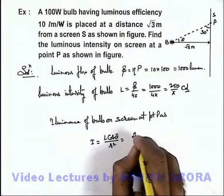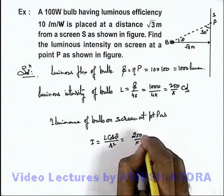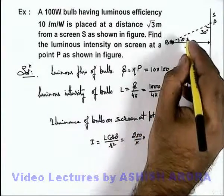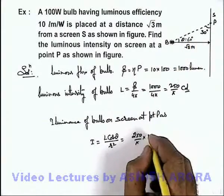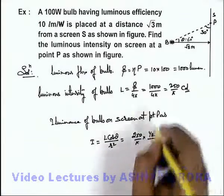So here this will be 250 by π multiplied by, here this angle θ we can take as 60 degrees, so here cos 60 will be 1 by 2 divided by r².